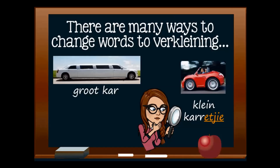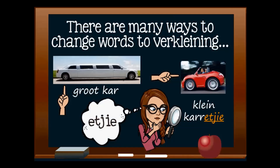There are many ways to change a word to a verklein woord. In this example we see a picture of a limousine, which is a big car — a groot kar. But when I want to talk about the size of the little red kar, I talk about a karretjie. Which part of the word karretjie shows me it is a verklein woord? That's right — the E-T-J-I-E at the end of kar. All our examples will end in the I-E or 'ie' sound to show that we are talking about something small.